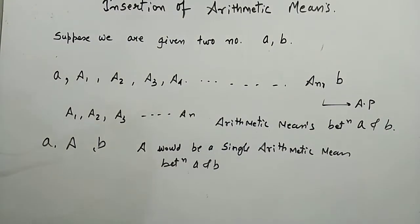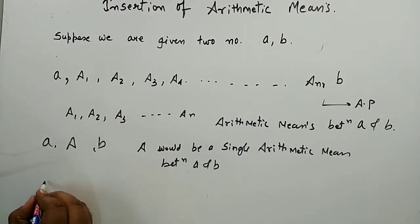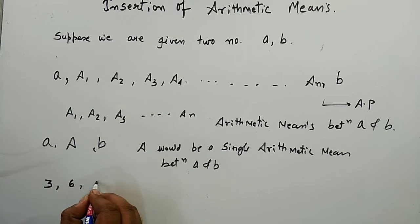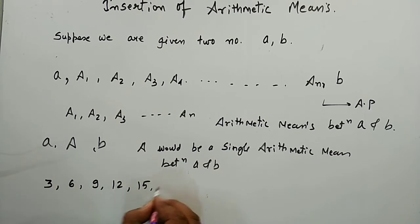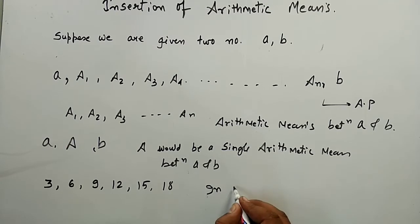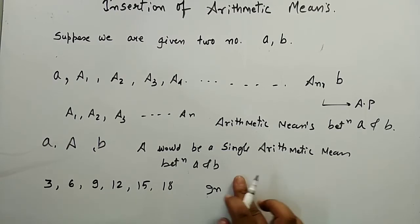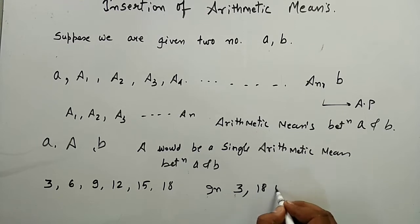For example, suppose we have an AP: 3, 6, 9, 12, 15, 18. Then in between 3 and 18 we have four arithmetic means.